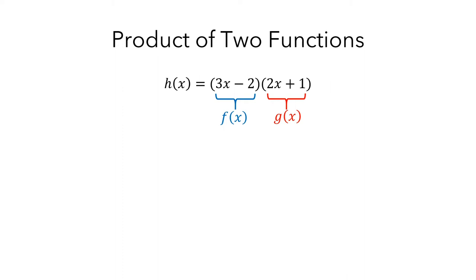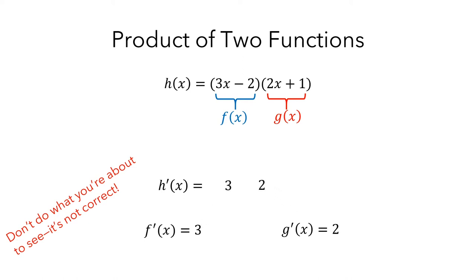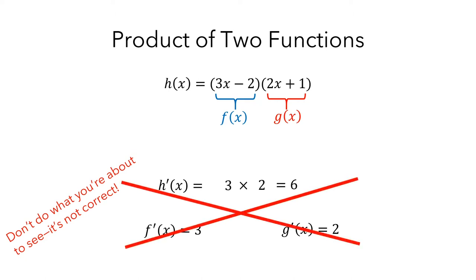If I asked you to find the derivative function h', your instinct might be to do something that, it turns out, isn't correct. You might first think that the derivative of f is 3, and the derivative of g is 2, and then you'd just multiply the derivatives of f and g to get h' equals 6. But unfortunately, your instinct would be wrong here.